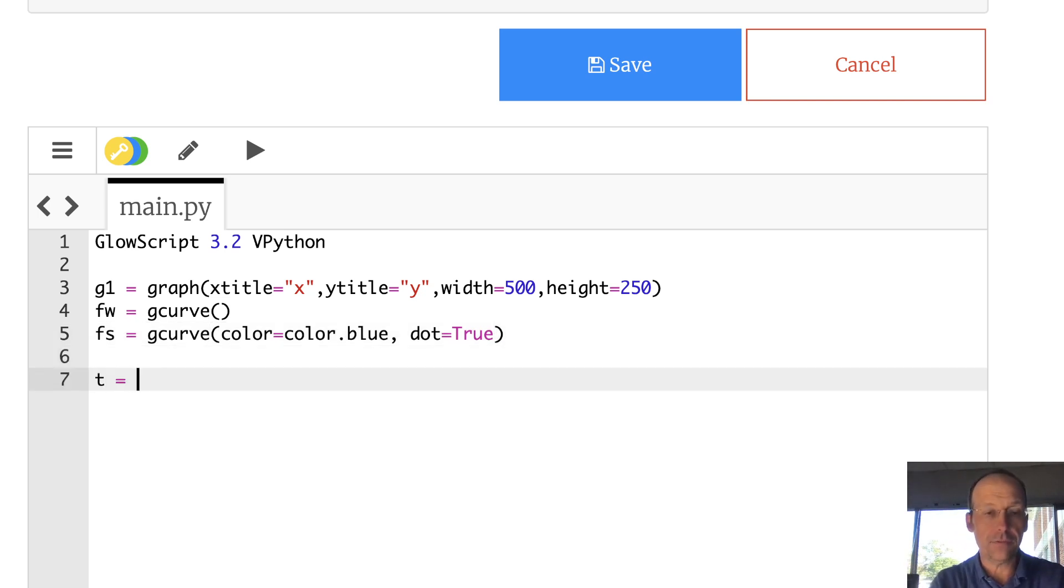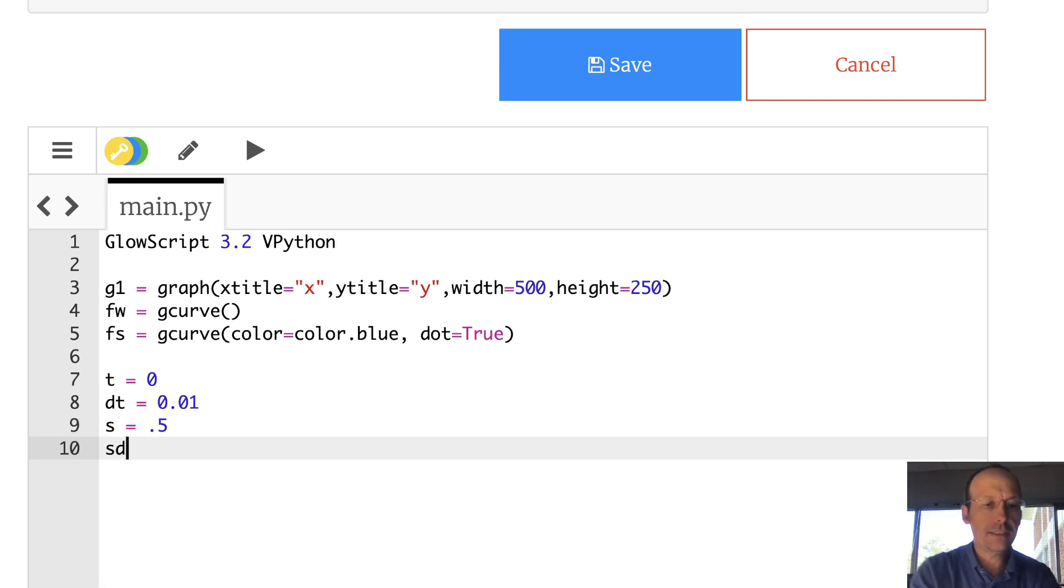I'm going to actually plot the trajectory of the mass. So let's plot x title of x, y title of y. And I do need to give it a width. Width equals 500. Height equals 250. And I actually want to make two lines. I want to make a dot, moving dot, to show the location of the mass. But I also want to make the wire. So let's say fw. That's the wire. It's a g curve. And let's just leave it in black. And then fs. That's going to be the plot for the mass. It's going to be a g curve. Color equals color dot blue. And dot equals true. So dot true when you plot this. Whenever it moves the thing around. It's going to leave a dot at the location. So I can essentially make an animated graph. Which will be really nice.